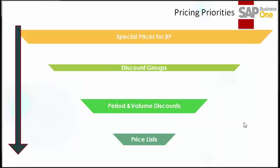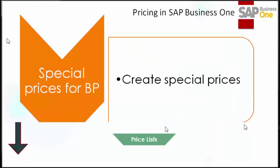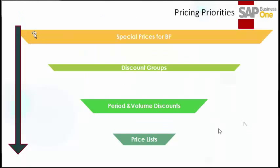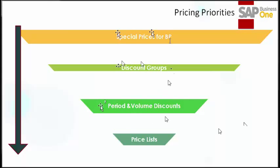This is the pricing priority order. The system will first check special prices for the business partner, then discount groups, then period and volume discounts, and finally the price list.